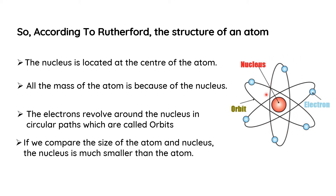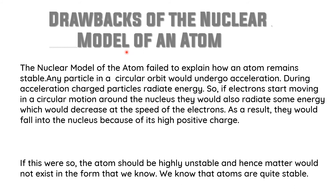This is the structure of Rutherford's model of an atom. Now we will discuss the drawbacks of this nuclear model. The nuclear model of the atom failed to explain how an atom remains stable. Any particle in a circular orbit would undergo acceleration — because in a circular path, velocity changes each moment, and the rate of change of velocity is acceleration.